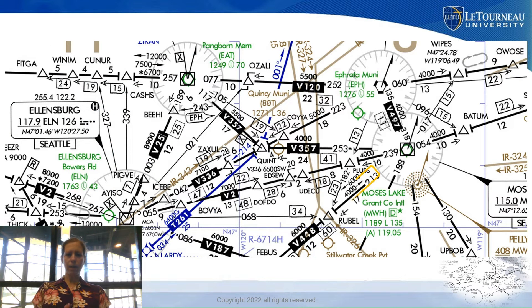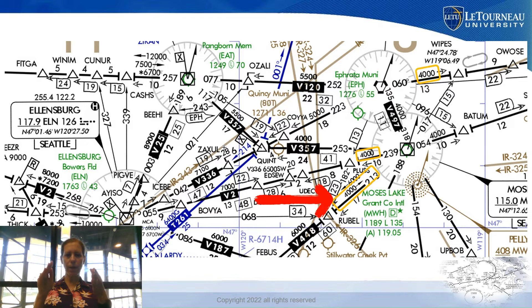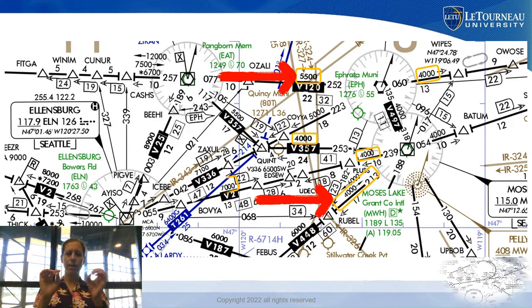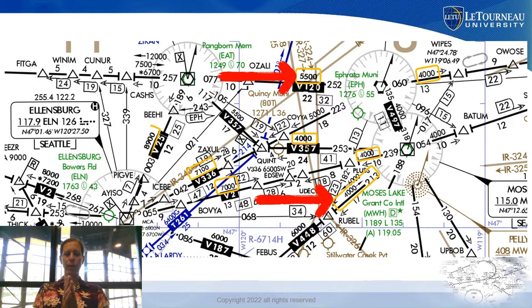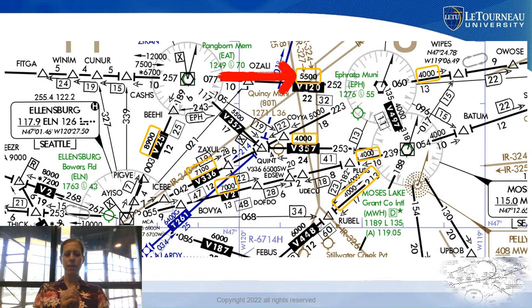Here is an example on a chart. There are yellow boxes highlighting all the different MEAs in this area. You can see them printed along the various Victor Airways — they're just a number printed along the airway.